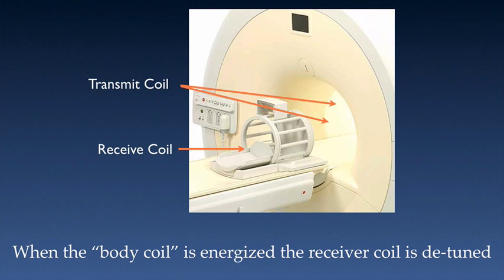When using a receive-only coil in a cylindrical bore high-field magnet, the integrated body coil is going to be used as the transmit coil. When the body coil is energized, the receiver coil is detuned by the system software so that it doesn't have current induced in the coil during RF transmission.